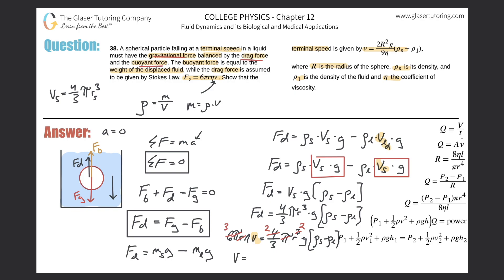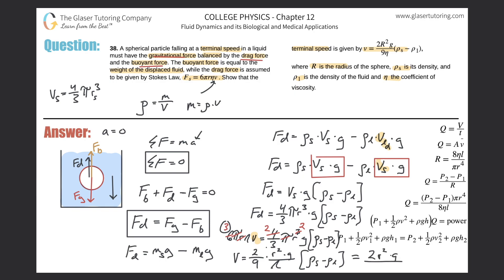Solving for v, the three in the denominator multiplies with the existing three, giving nine, and the viscosity η moves to the denominator. The final result is: v = (2r²g / 9η) · (ρ_s − ρ_l). Reorganizing to match the expected form: v = 2r²g(ρ_s − ρ_l) / 9η.